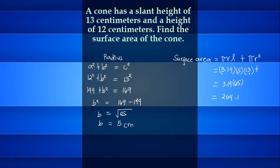Base area is 3.14 times the radius, which is 5. 5 squared. 5 squared is equal to 25. 25 times 3.14 is equal to 78.5.